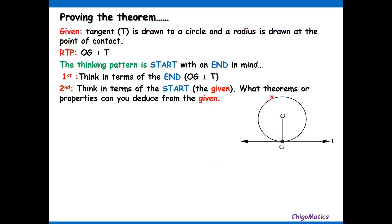We see that we have a tangent and radius OG. There's nothing much we can deduce directly, but there's an important property relative to the radius and the tangent.